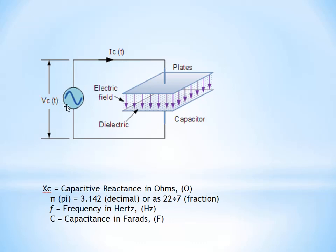If we apply a DC voltage instead of AC, the capacitor will draw charging current from the supply and charge up to a value equal to the applied voltage.